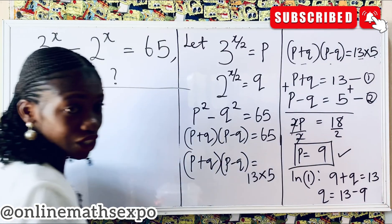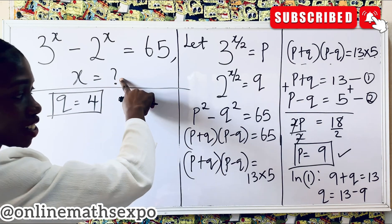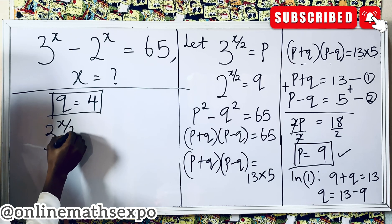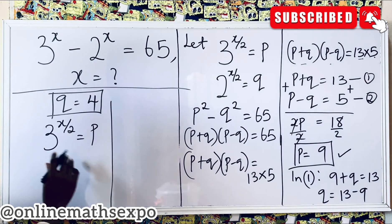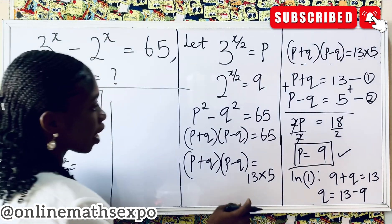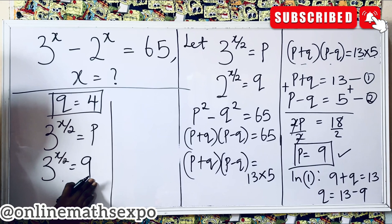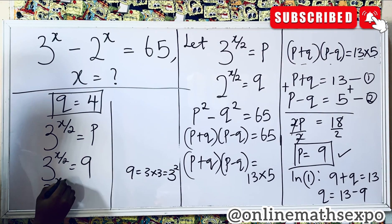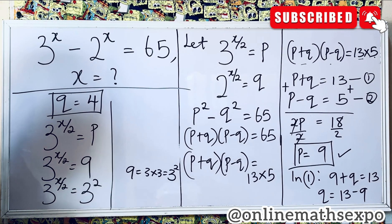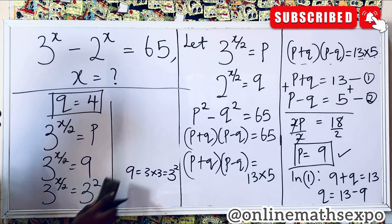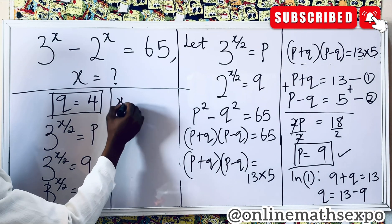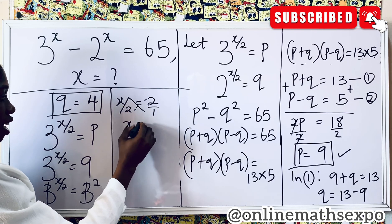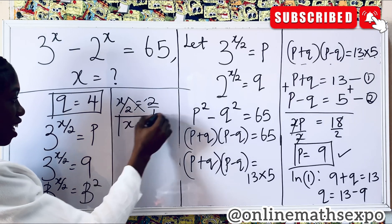Having found p and q, fix them back since the question asks for x. Recall that 3 to the power of x over 2 equals p, which is 9. Express 9 as a power of 3: 9 equals 3 times 3, which is 3 squared. So 3 to the power of x over 2 equals 3 to the power of 2. The bases are the same, so equate the exponents: x over 2 equals 2. Cross-multiplying gives x equals 4.